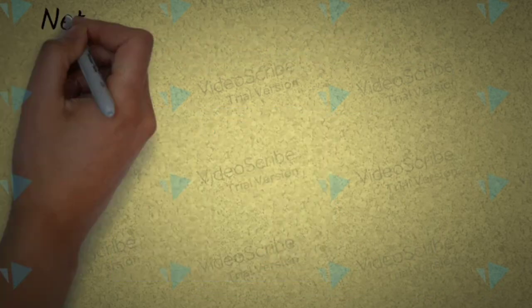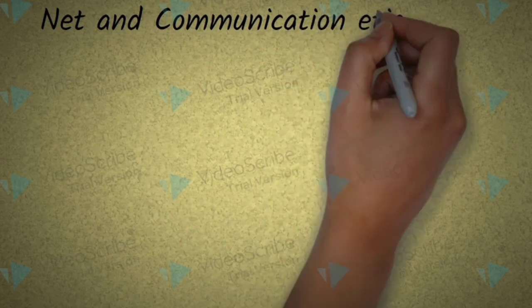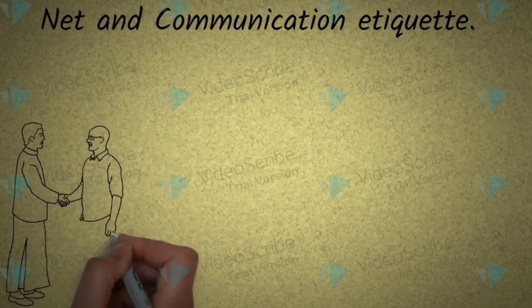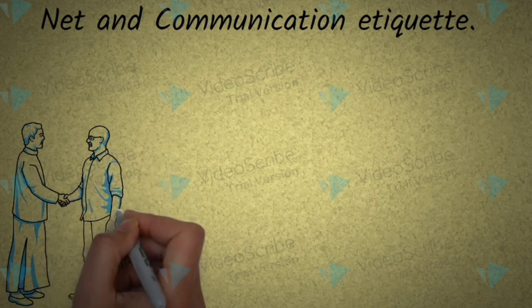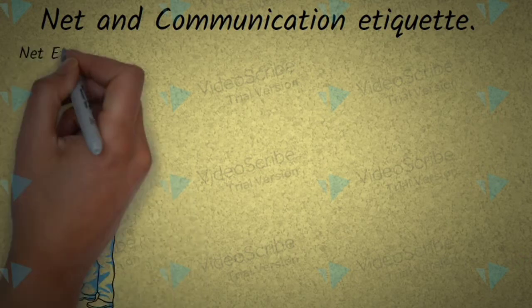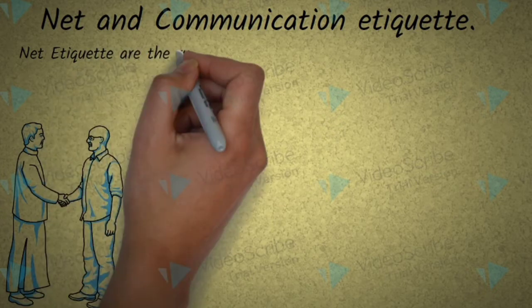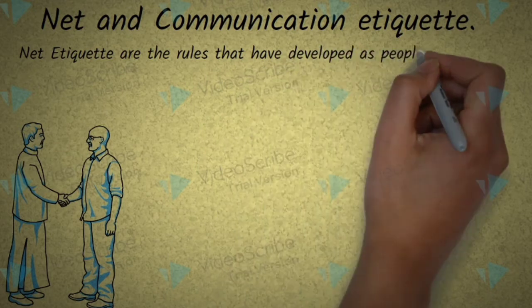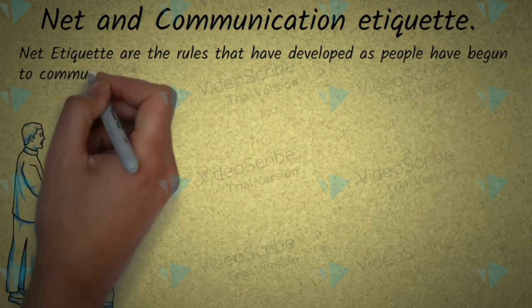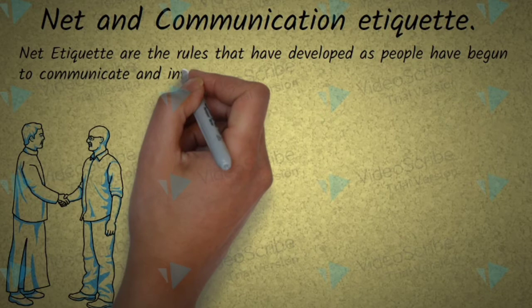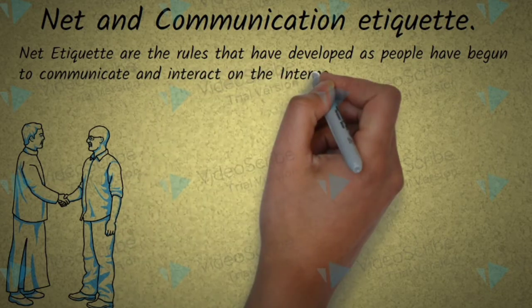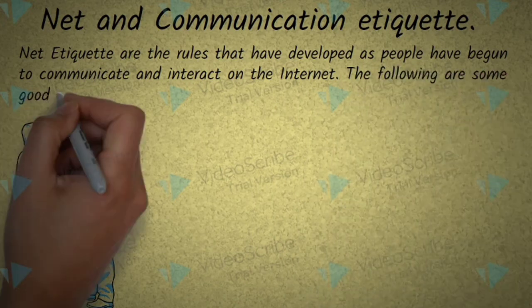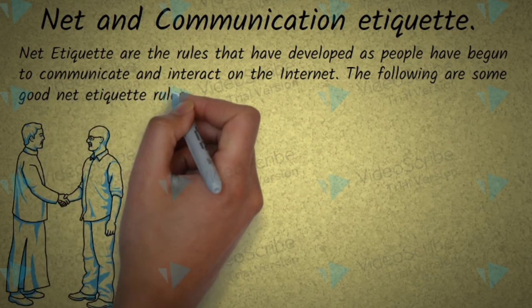Next, while having a conversation with another person, we follow certain etiquettes for polite behavior. Similarly, we have net etiquettes for online communication. Net etiquettes are the rules to behave politely while having a conversation with another person in online mode. When we are interacting with someone on the internet, some rules have to be followed.